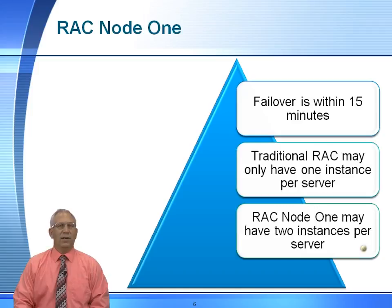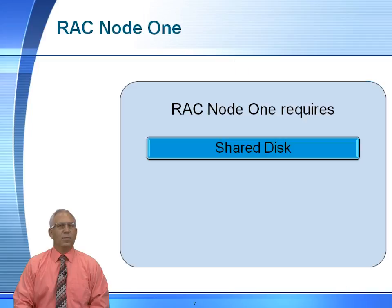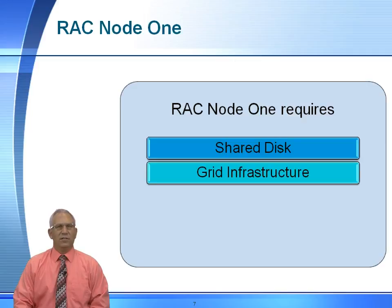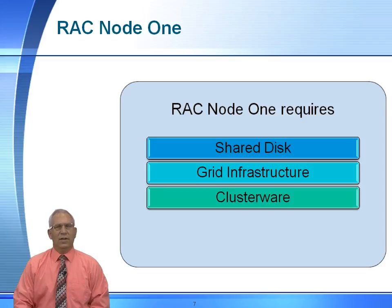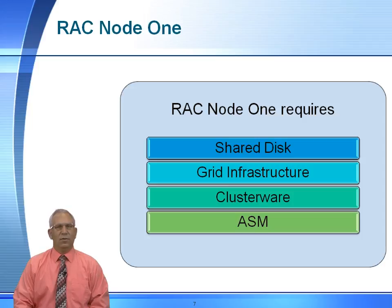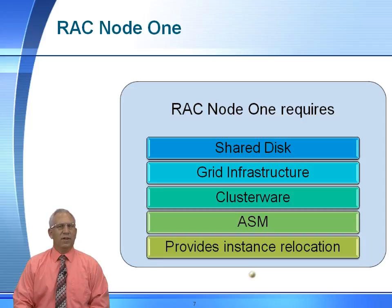Keep in mind that in a RAC 1 Node, you may have two instances on one server. It's going to operate the same way traditional RAC operates. You're going to have shared disks, your voting disk, your OCR disk, your online redo log files, your control files — the whole lot. You're going to have the grid infrastructure, ASM, clusterware, your RAC scan, your VIP, your high availability VIP, and it does provide for easy instance relocation.